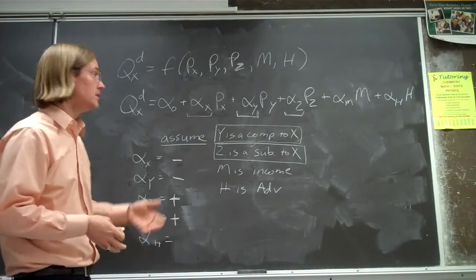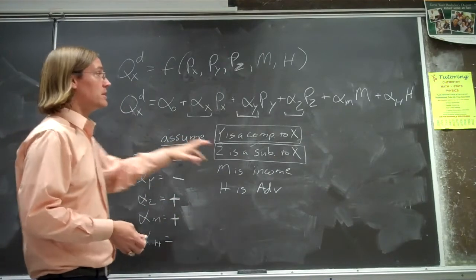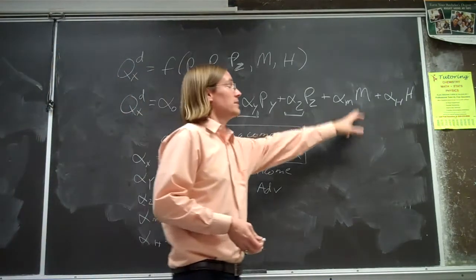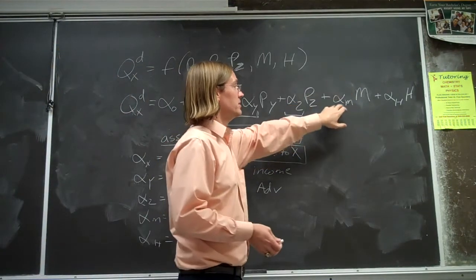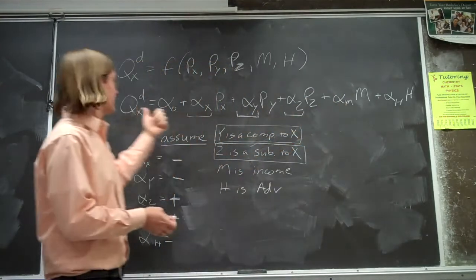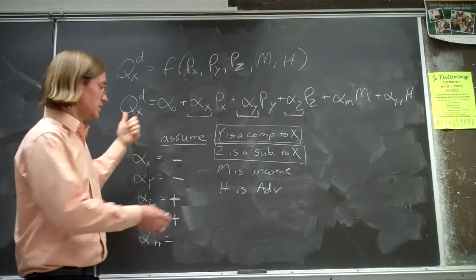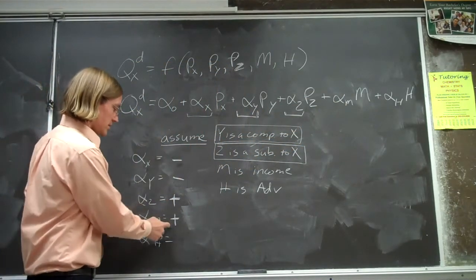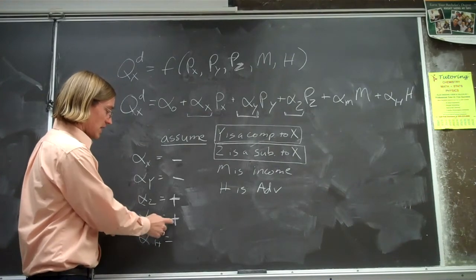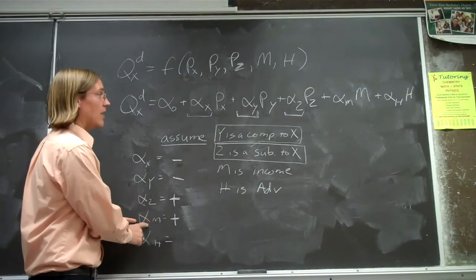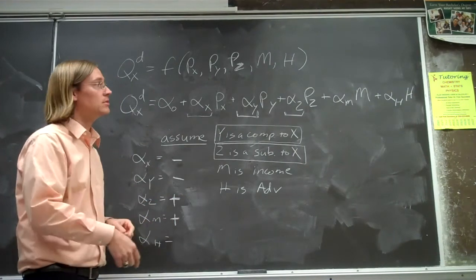If it's an inferior good — like ramen noodles — then as our income goes up, we're going to buy less ramen noodles. Thus the sign on alpha-M would be negative.